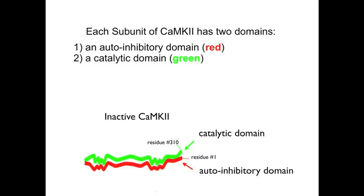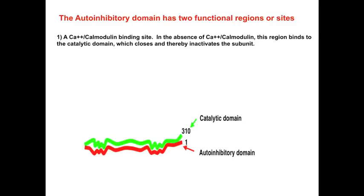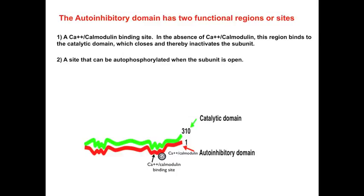The catalytic domain contains the portion that actually phosphorylates other proteins. The autoinhibitory domain has two functional sites. The first is the calcium-calmodulin binding site. In the absence of activated calcium-calmodulin, this region binds to the catalytic domain, causing the subunit to close. When the subunit is closed, it is inactivated and cannot phosphorylate other proteins. The second site is the autophosphorylation site, which can be autophosphorylated only when the subunit is open.